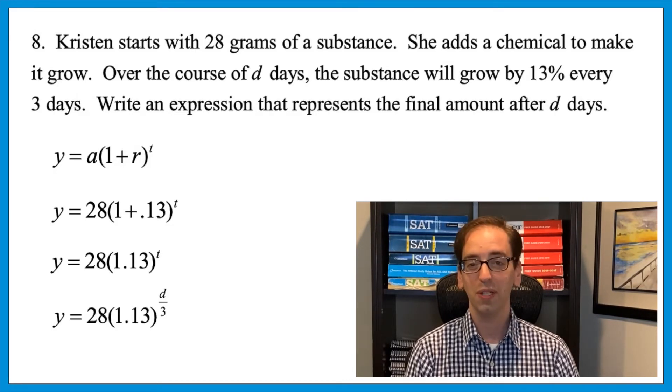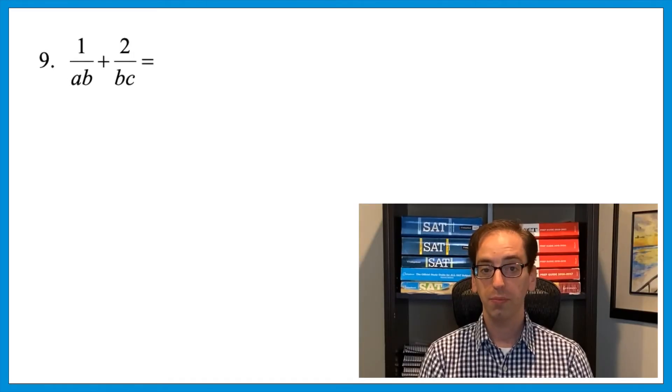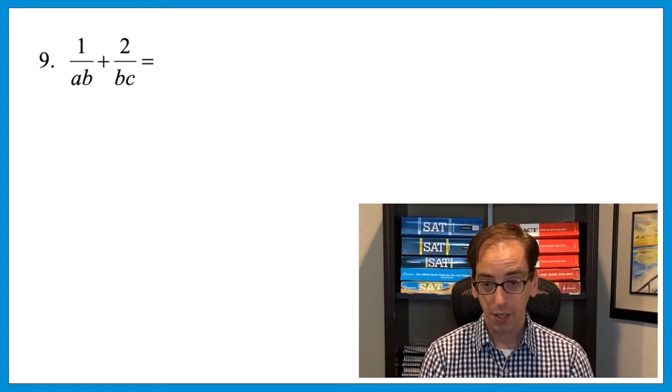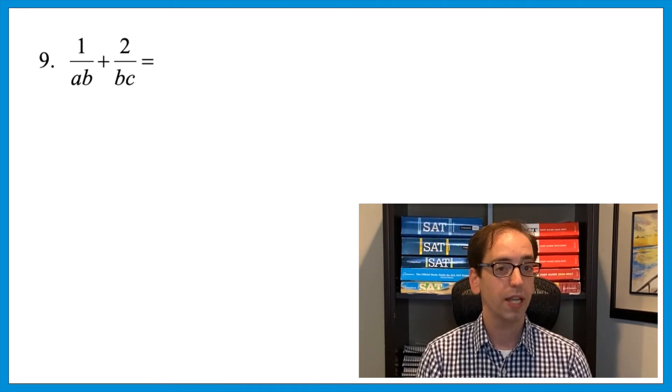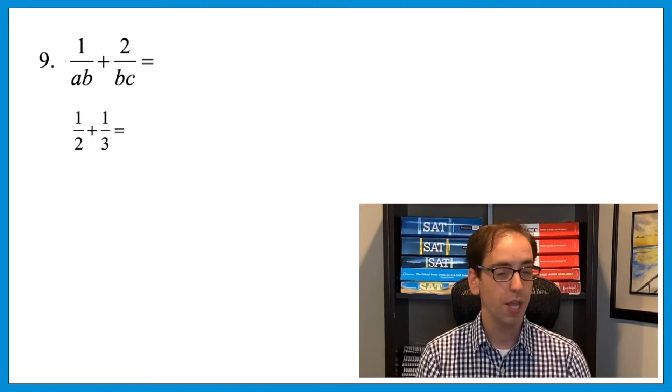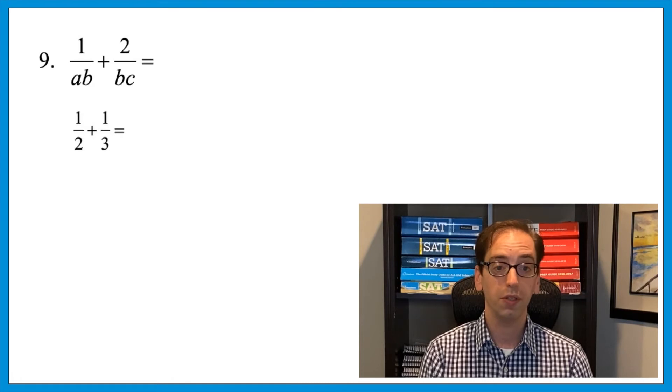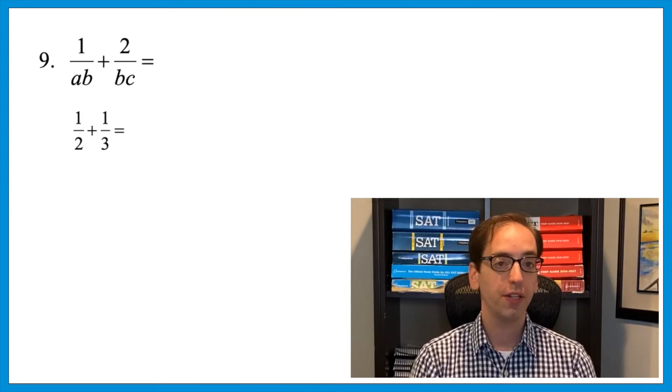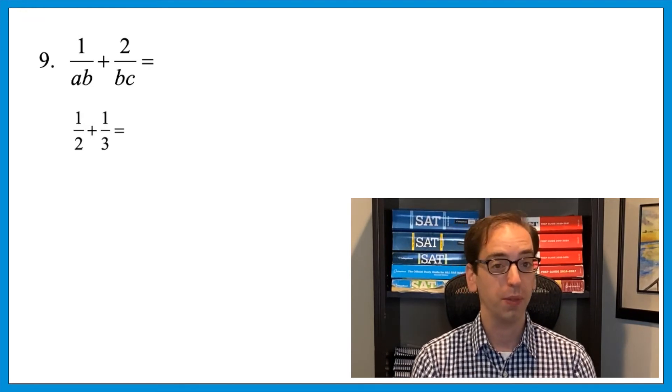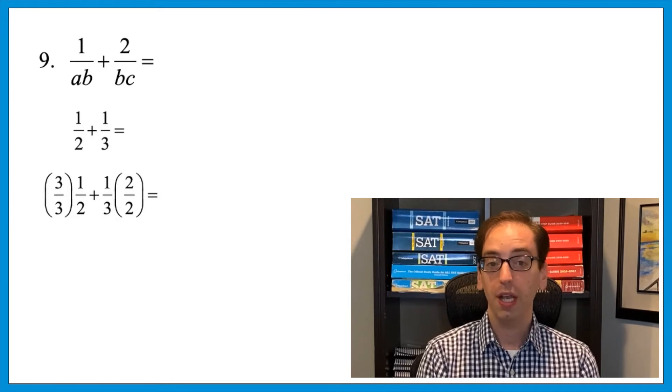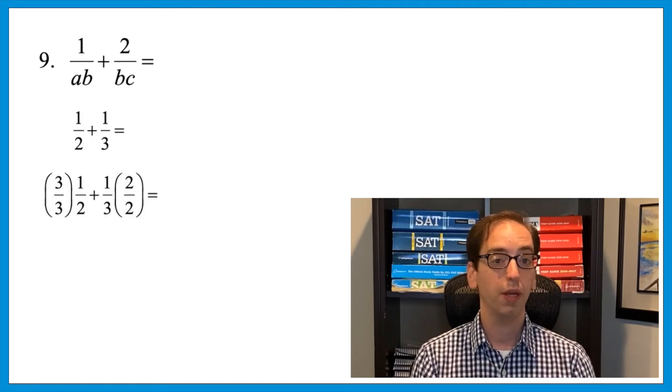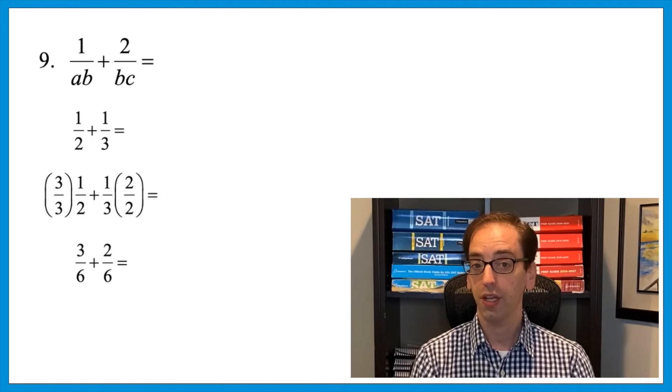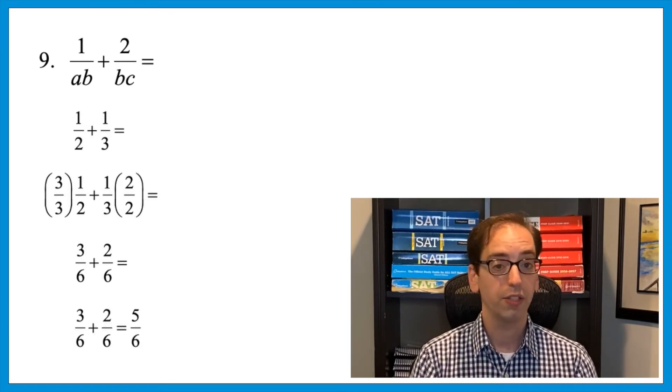1 over ab plus 2 over bc equals what? This one's a little more challenging. Let's make sure first that we are solid with our rules of fractions before we proceed. So talking about denominators for a moment, let's pretend that this said one half plus one third. What's the rule? In order to add fractions, you have to have common denominators. You need to find a multiple that both the 2 and the 3 will go into. In this case, 6. So how can we get both of these denominators to be 6? You multiply it by what it's missing, so to speak. The 2 needs to be multiplied by 3, and the 3 needs to be multiplied by 2. So you would take the first fraction and multiply it by 3 over 3, and the second one by 2 over 2. That would give you 3 over 6 plus 2 over 6. And in adding fractions, you only add the tops. The final answer would be 5 over 6.